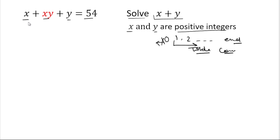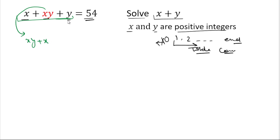In the left hand side we have values in terms of x and y, and on the right hand side we have 54. For the solution, we'll try to make this expression in the form of factors. We'll write xy first, then x, then y. We can take x common, leaving the factor y plus 1.